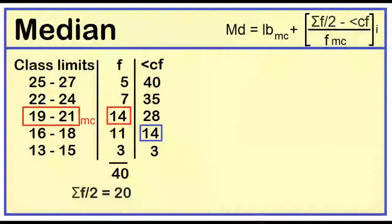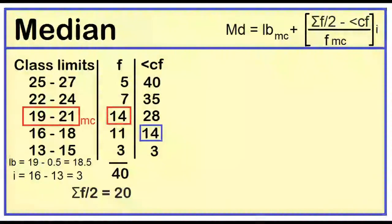When the data values are whole numbers, just subtract 0.5 from the lower limits to find the lower boundaries. The lower boundary of the median class is 18.5. To find the class width, just subtract two consecutive lower limits. 16 minus 13 is 3.